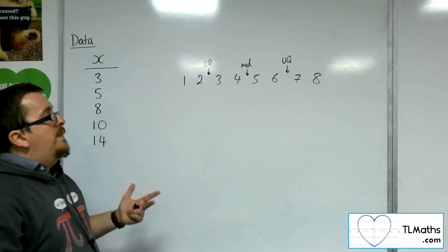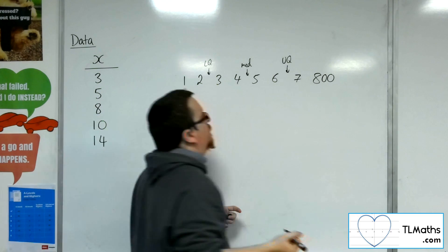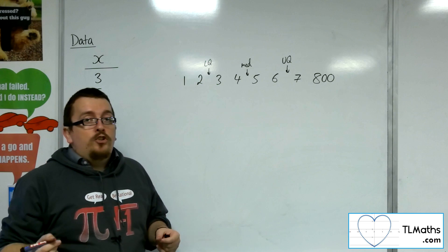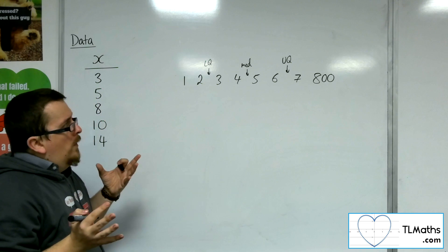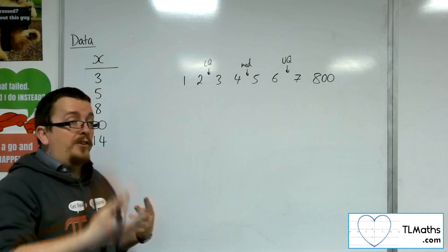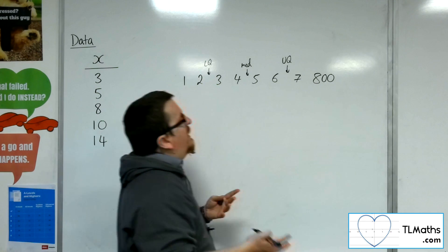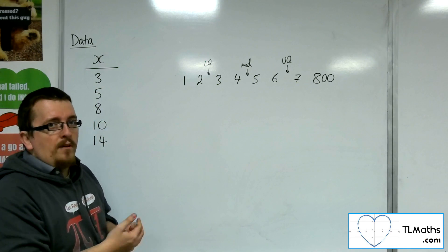However, if I then changed maybe the last number to 800, for example, then the interquartile range doesn't change. Because the quartiles are based on their position, and so it is unaffected by extreme values.